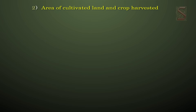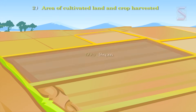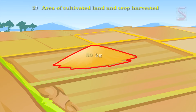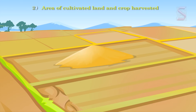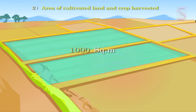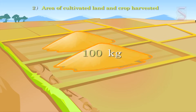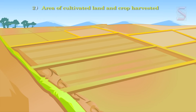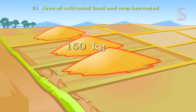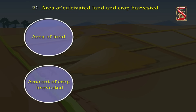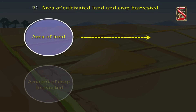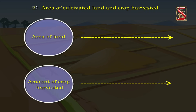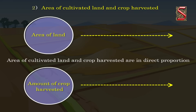Second: area of cultivated land and crop harvested. If in 500 square metres we can harvest 50 kilos of crop, then in 1000 square metres we can harvest 100 kilos, and in 1500 square metres we can harvest 150 kilos. As the area of land increases, the amount of crop harvested also increases. So area of cultivated land and crop harvested are in direct proportion.